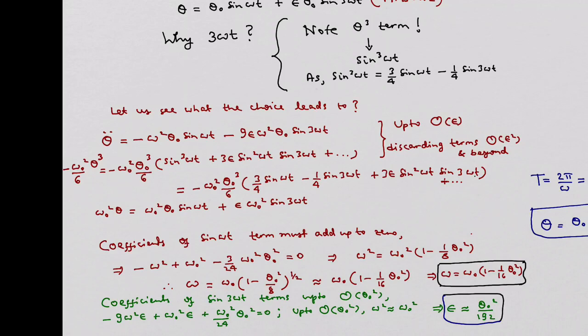Up to the order we have expanded, we find the following expression for ω² in terms of ω₀² and θ₀². Which leads us to ω₀²(1 - θ₀²/8) as the value for ω². And that in turn leads us to a value of ω which is ω₀(1 - θ₀²/16).